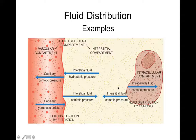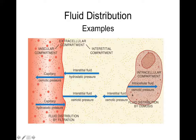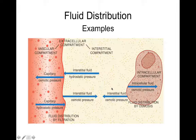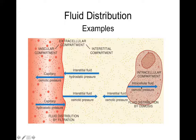Across cells, movement of water is ultimately due to osmosis — water follows solutes. If you have a lot of solutes inside a cell, water is going to enter. If you have a lot of solutes outside a cell, water is going to leave. Under normal circumstances, you should find the same solute concentration intracellularly and extracellularly, so there's no net gain or loss of water and your cells don't explode or shrivel.